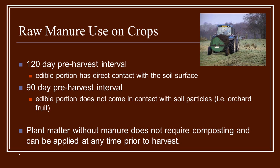One way to add organic matter to your soils without going through composting is to use raw manure, but there are very strict guidelines on how to use raw manure in the fields safely. There is a 120-day pre-harvest interval. So if you have something to harvest in July, you'll have to back out four months — applying raw manure in April for the edible portion that has direct contact with the soil surface.